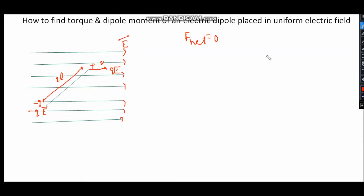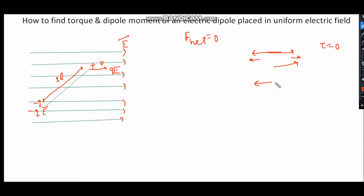But the torque acting on the dipole is not equal to 0. Why? Because if the forces are acting along the same line of action — one force in this direction and the other in this direction with the same line of action — then the torque is 0. But if the lines of action are different, with one force acting along this line and the other along this line, and there is a perpendicular distance between the two forces, then the torque is not equal to 0.